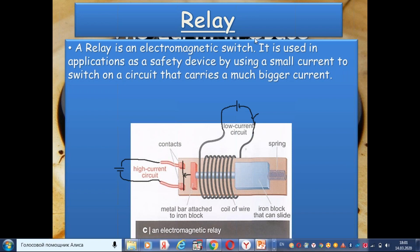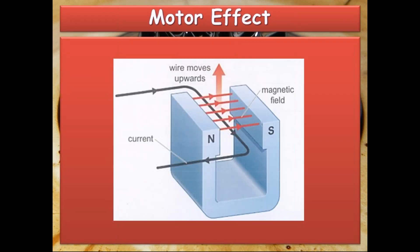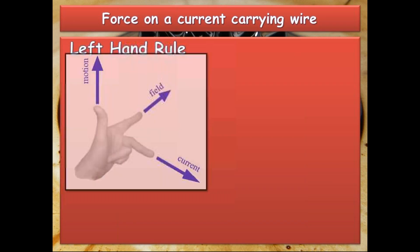Let's take a look at another use — a current-carrying wire inside a magnetic field. There is a magnetic field with north and south poles, and the magnetic field is directed from north to south. If we place a current-carrying wire in the middle, you know that a current-carrying wire also creates its own magnetic field. The combination of these two magnetic fields causes a force on the wire and it will move upwards.